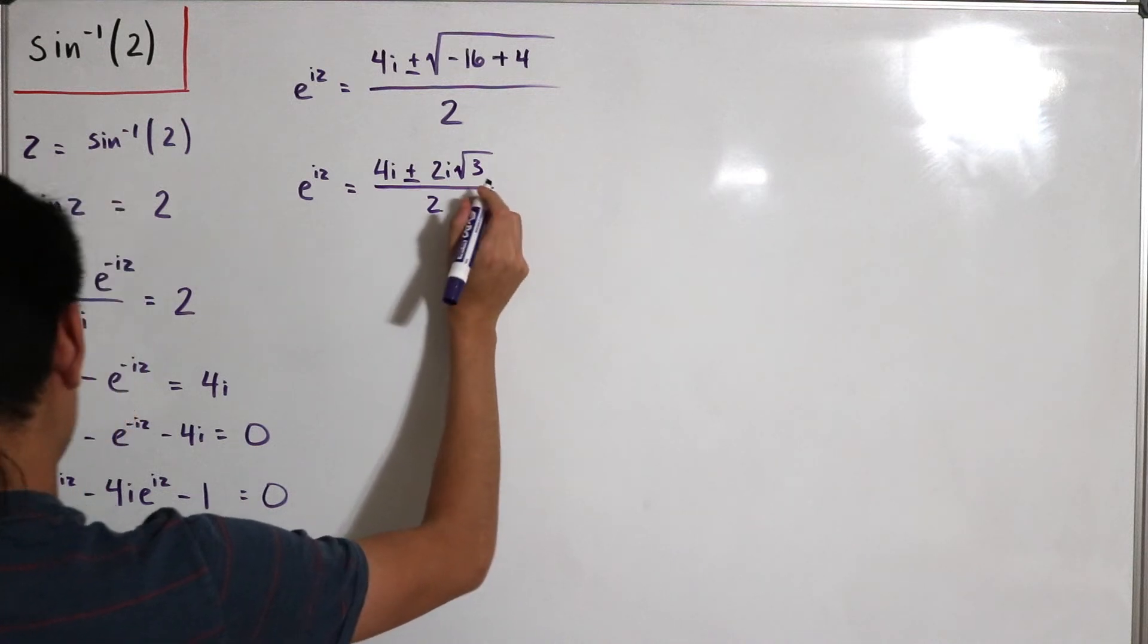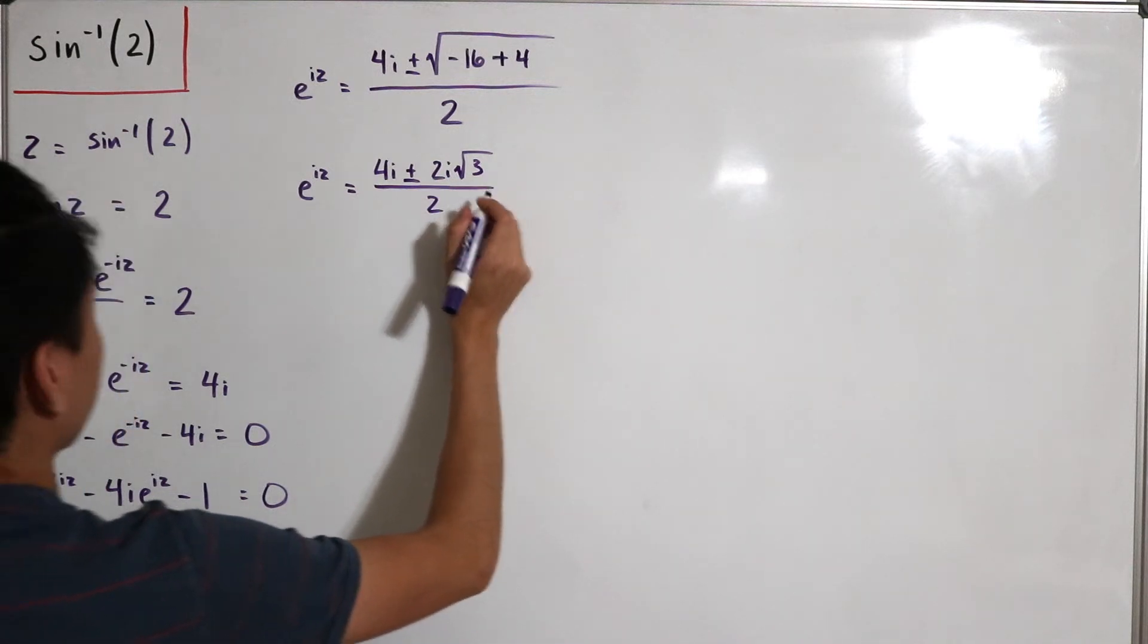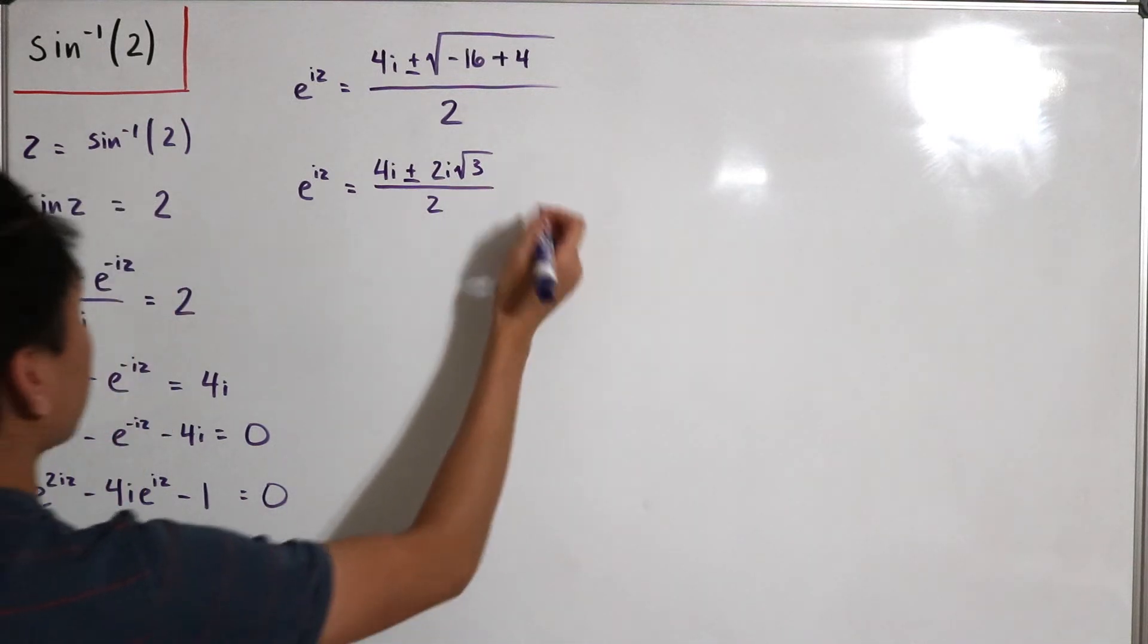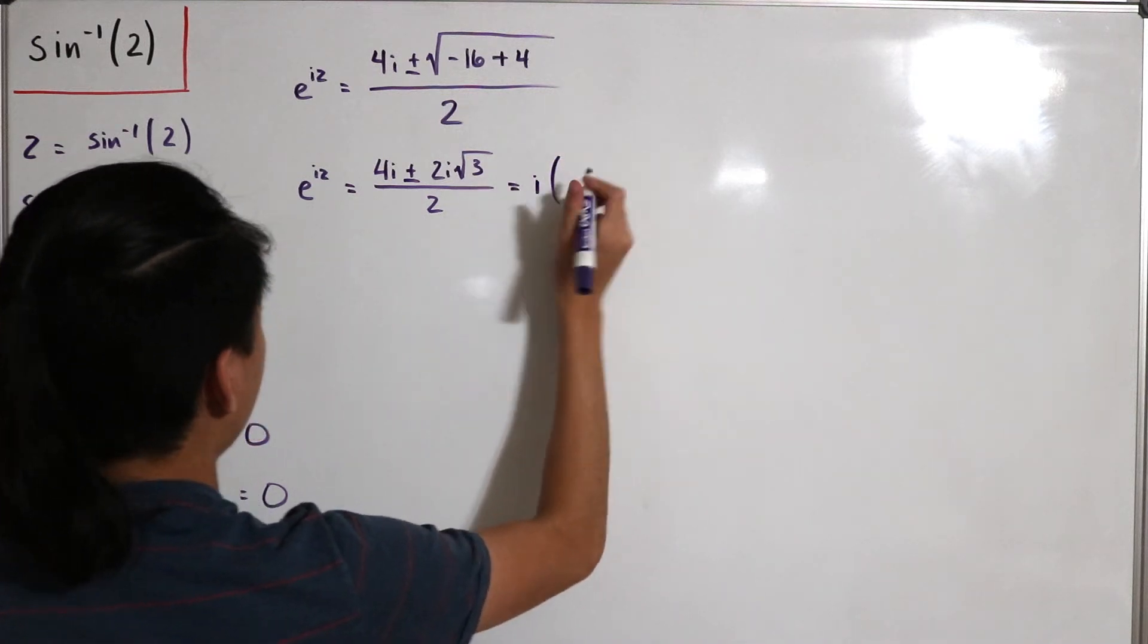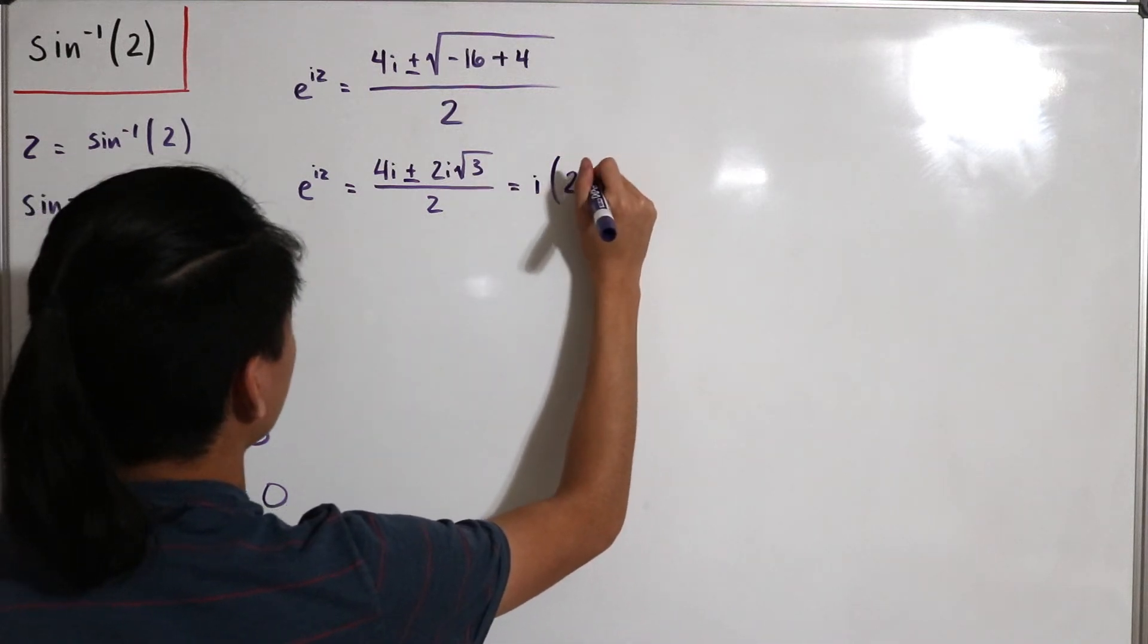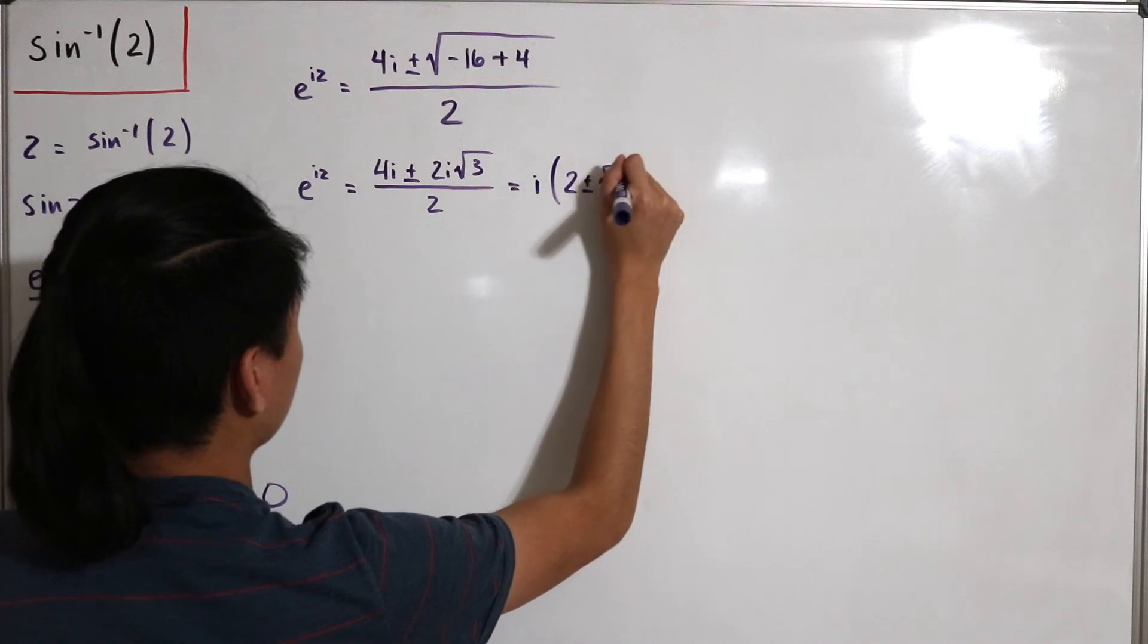And then if I could actually just simplify this out even further, they both share the imaginary unit, so I can actually just factor out the i. So then this becomes i times 2 plus or minus the square root of 3.